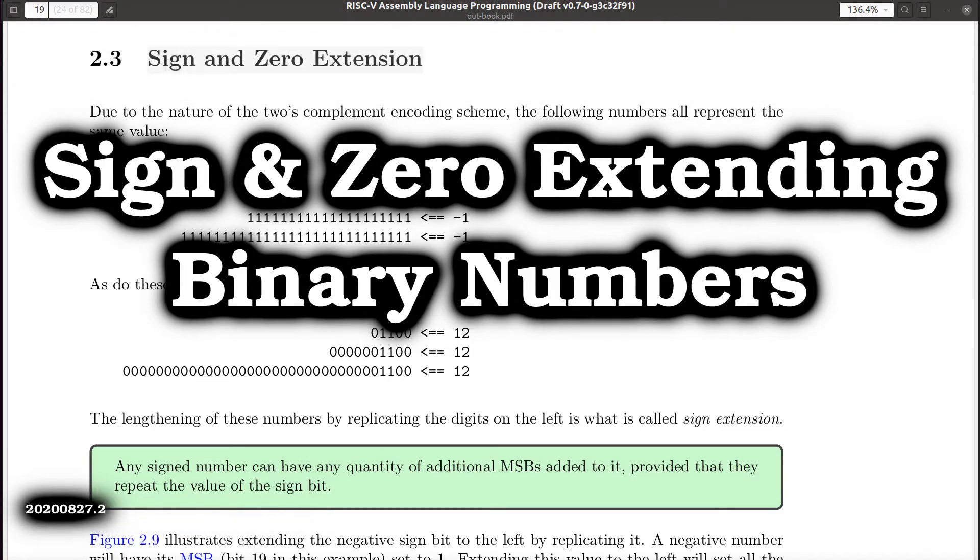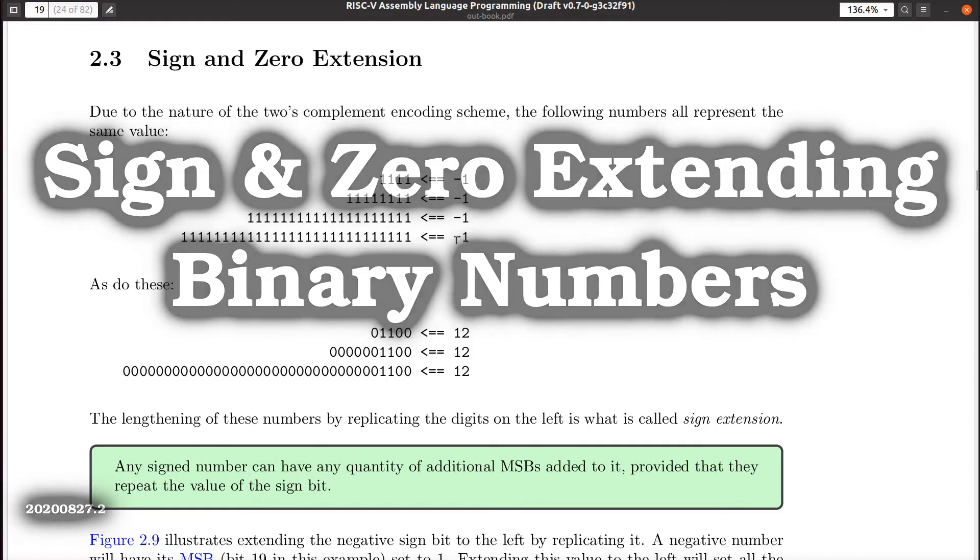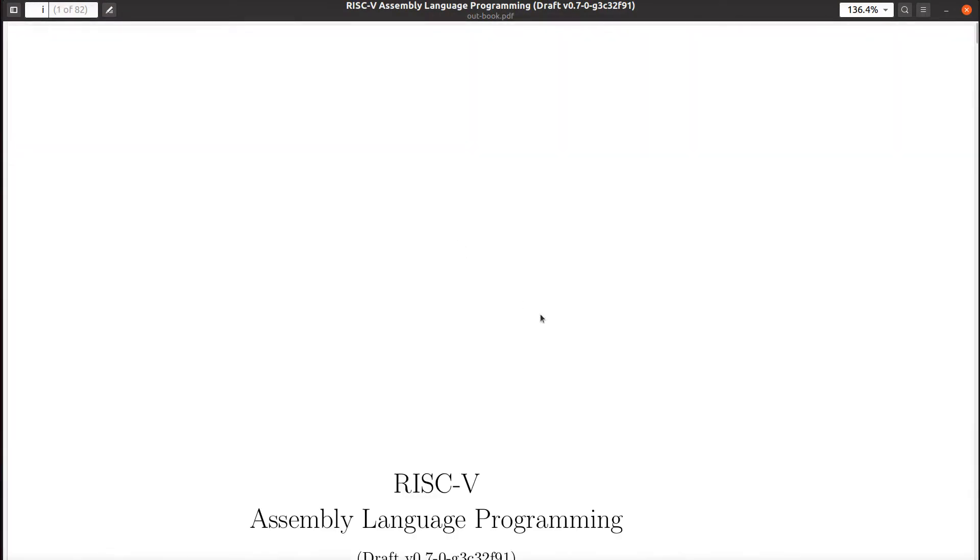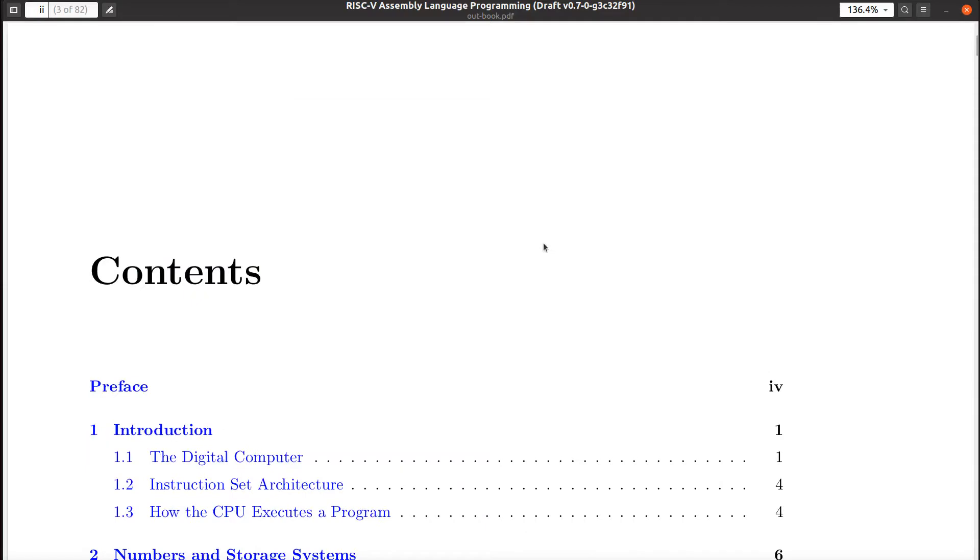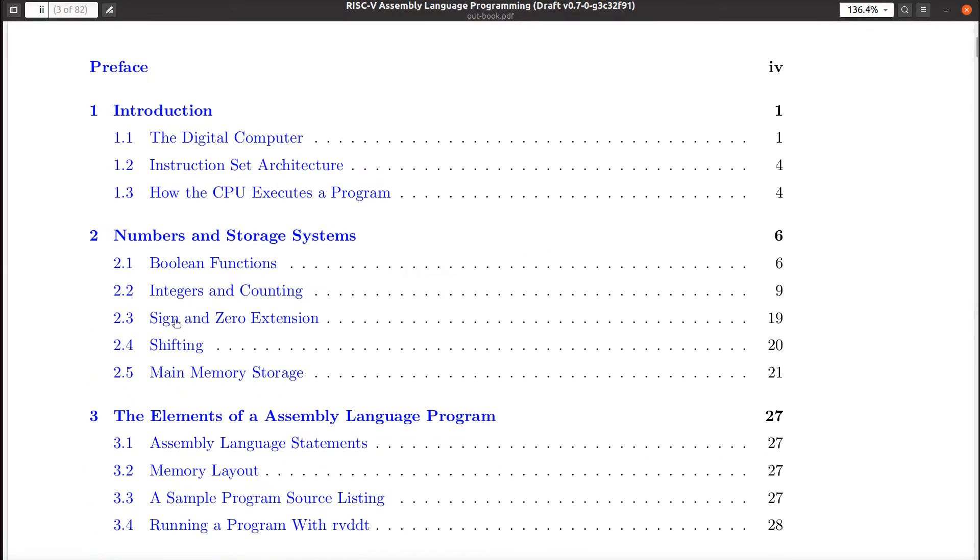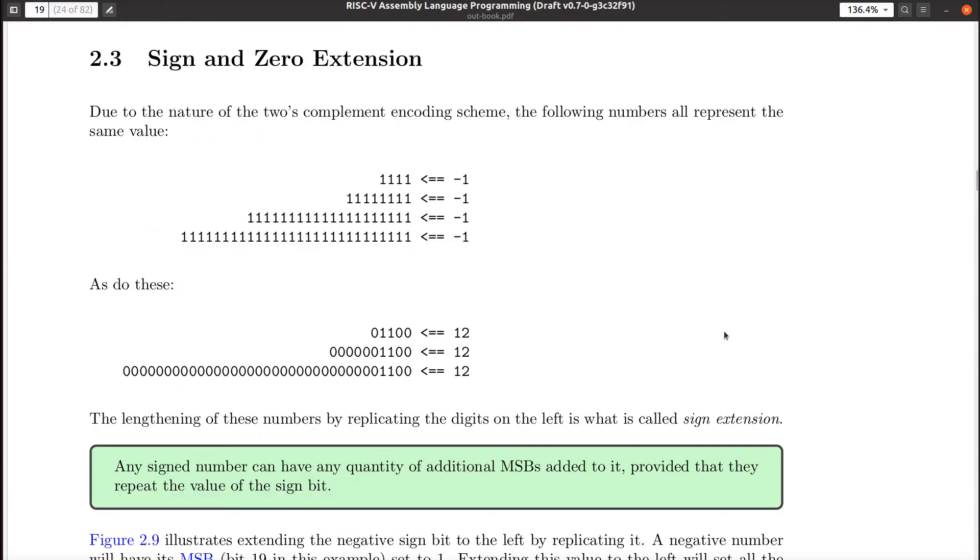Hey, John here. Let's talk about sign and zero extending binary numbers. This is a section of this RISC-V assembly language programming manual I'm working on. Someday I might actually finish it. I'm in section 2.3, so we go to the table of contents here and find 2.3, sign and zero extension. That's where I'm at.